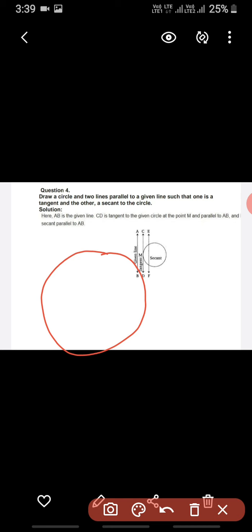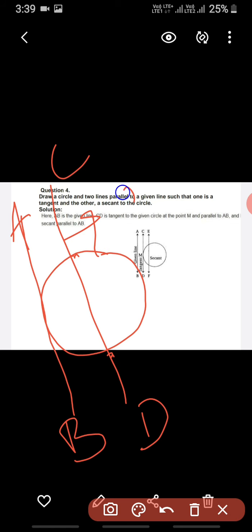Simple si baat hai. Ek circle draw kijiye, circle humne draw kiya hai. Now draw two parallel lines, lekin parallel lines aise daalne, ek to secant hona chahiye, doosra tangent hona chahiye. So this is one, this is second. Now AB is a tangent because it touches at a single point, and CD agar aap dekhoge, it touches at two points to the circle, so it's a secant. These two lines are parallel to each other.